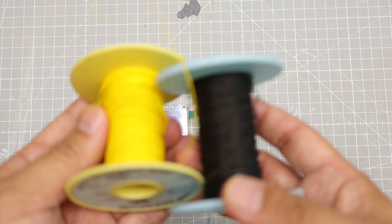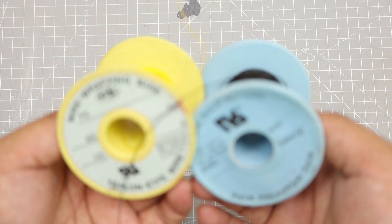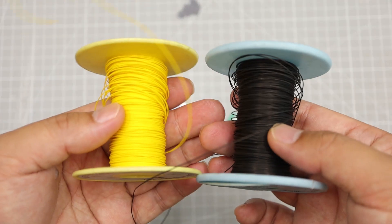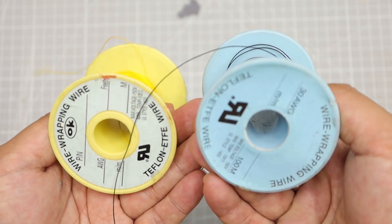Because of the tight space in the transmitter, I choose 30 gauge wires. I leave links for parts in the description.